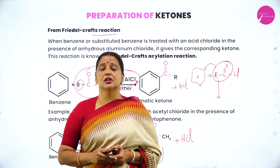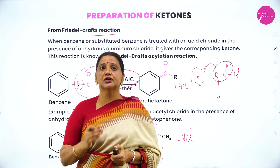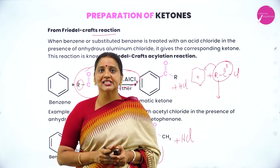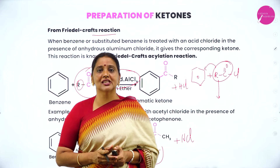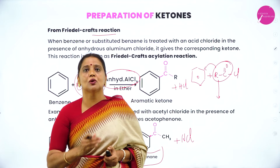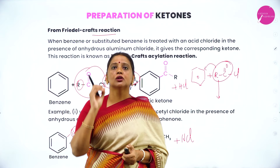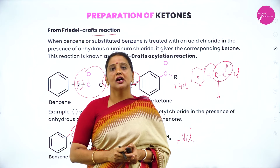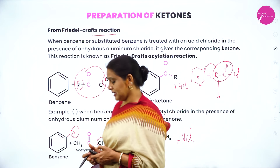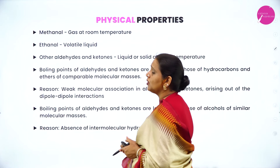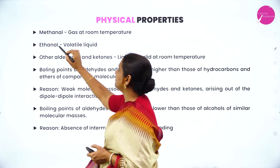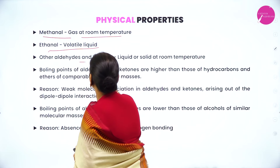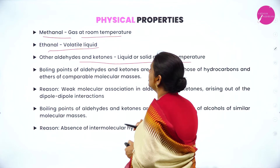The general formula of acid chloride is R, C double bond O, Cl. Moving on to physical properties: formaldehyde is a gas, ethanal is a volatile liquid, and other aldehydes and ketones are liquids or solids.